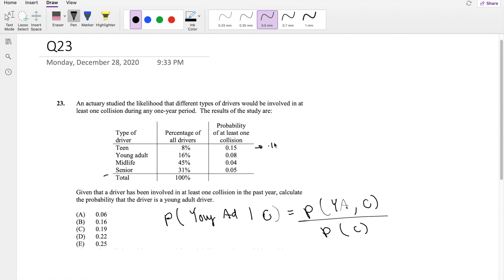So this will just be equal to 0.15 times 0.08. The next one would be 0.16 times 0.08. This one is 0.45 times 0.04. And lastly, 0.31 times 0.05.